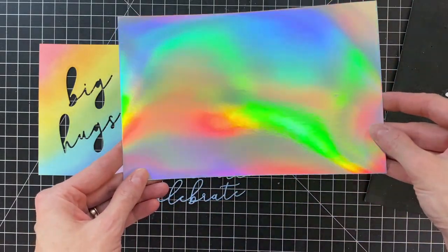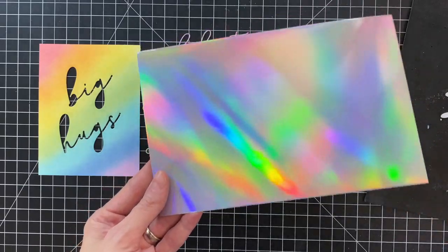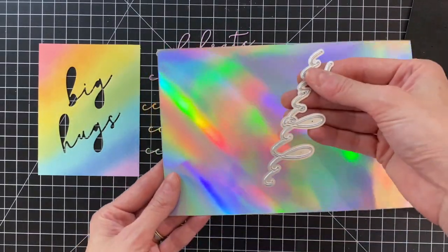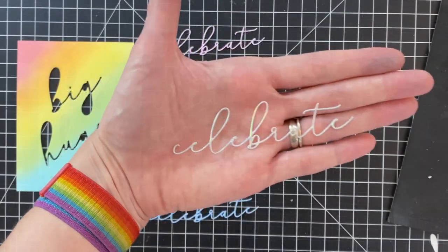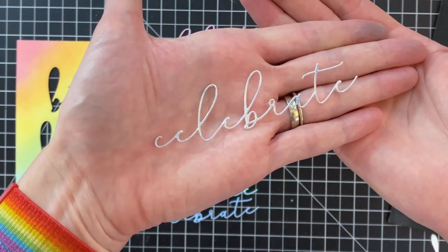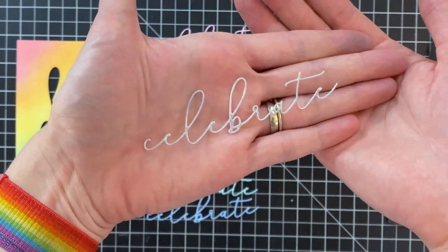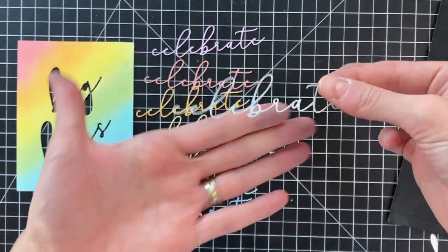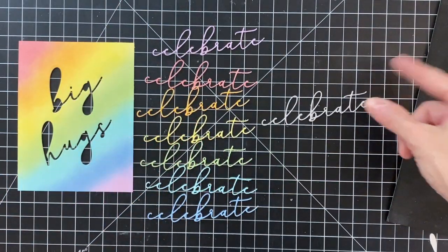So now that I've die cut all of my little scraps of ink blended cardstock, I'm ready to move on to my holographic paper and here is a bit of it. You can see how beautiful that is. So much color and shine. I'm going to die cut the word celebrate out of that holographic paper to start with. So that is all my die cutting done for my two cards.